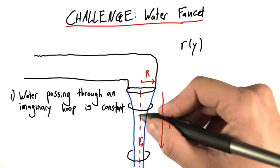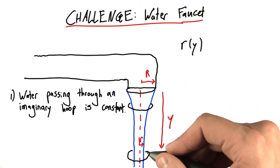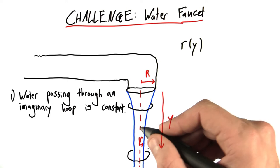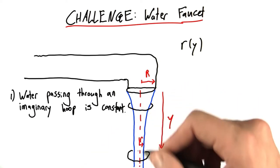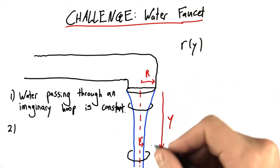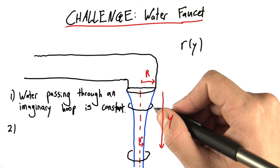and an imaginary ring here, and let the water pass through both of them, if one liter of water is passing through this ring every minute, then one liter must be passing through this ring too. None of the water is splashing off to the side. It's not building up in the middle. So it must be the case that the water flow rate is constant.